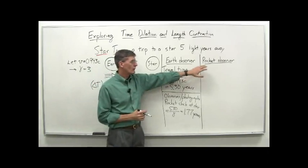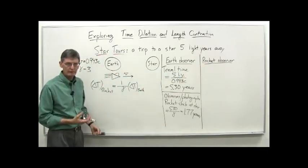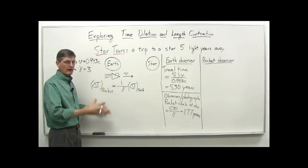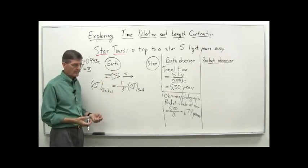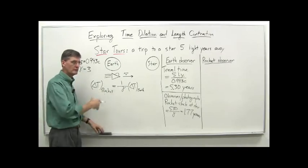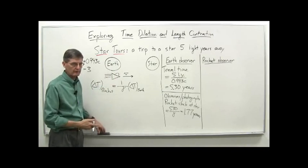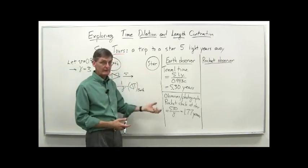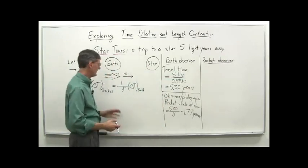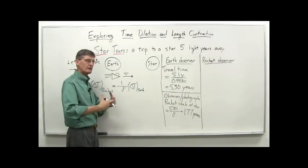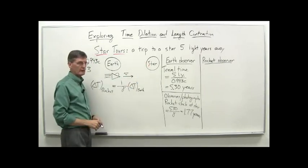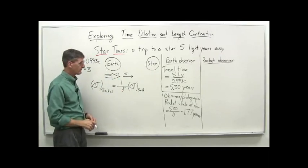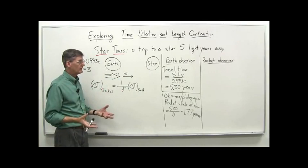Now let's look at what the rocket observer — Bob — would observe as he travels. This is very similar to our muon problem; in fact it's really an exact analog. From the rocket perspective, he's stationary in his frame of reference and it's the Earth-star system that's moving with respect to him — the star is rushing towards him. Therefore, the relevant effect here is not time dilation but length contraction.